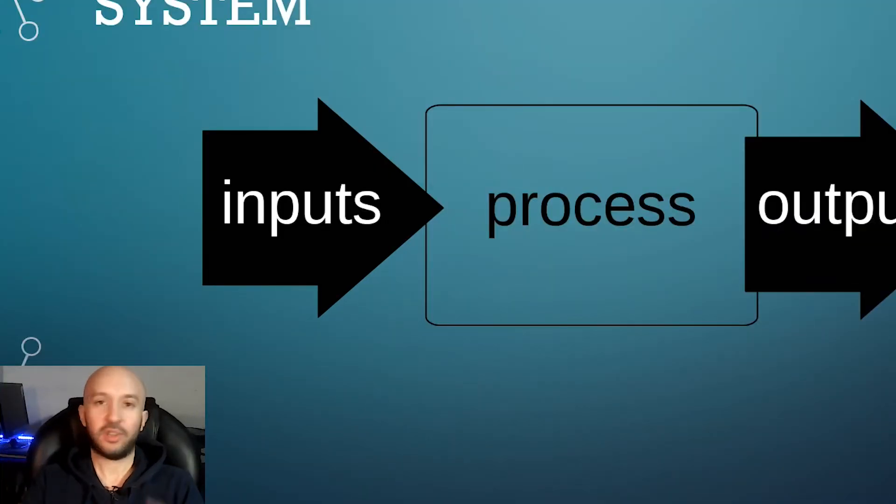Then the process itself is all the algorithm in code that will solve the problem through the logical steps that we took before and then it will produce an output. That is the result that will be shown to the user. So that is the super basic schema of any program or any system. You have inputs, you have a process and you have outputs.